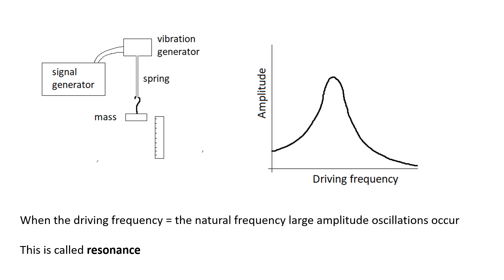This is an experiment you should know. We have a mass on a spring, a signal generator, and a vibration generator, and we're basically making the mass on a spring oscillate — we are driving it with an external driving force. We can measure the amplitude of these oscillations. At very low frequencies, the mass just goes up and down, doing what it's told by the vibration generator at the same frequency, and the amplitude is what the vibration generator tells it to be.